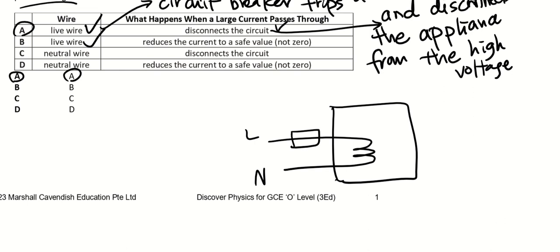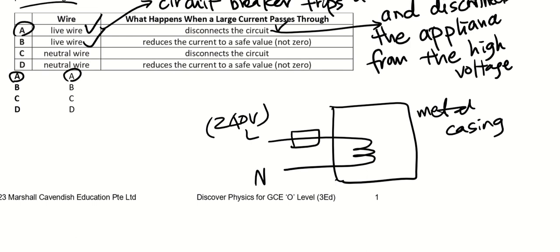There is no earth wire and this is a metal case. What is the voltage of the live terminal? The live wire is 240 volts, neutral is 0 volts. Now there is an electrical fault — the wires fray, meaning some wire came out and touched the metal casing. The potential of the metal casing is now 240 volts — very dangerous. This metal casing has no earth wire linked to it, only a fuse.